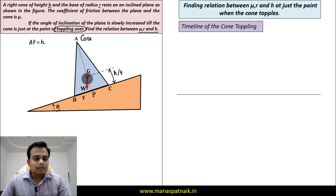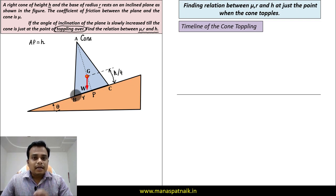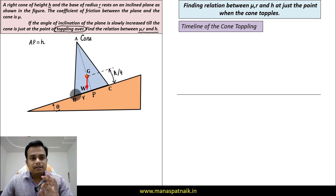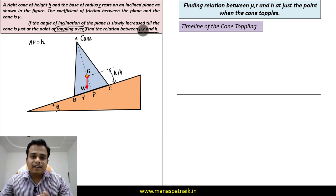You can clearly see that weight W is acting towards the right of point B. If you keep on increasing the angle, this line of action will come closer to this point B, and a time will arrive when this weight W or this line of action of weight W will pass through this point B. That is the state, that is the condition corresponding to which we will be finding the relationship.